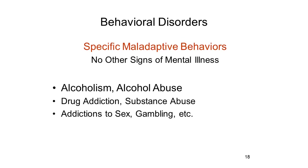In contrast, the category of mental illness known as the behavioral disorders consists of specific maladaptive behaviors—discrete behavioral problems that cause the person a lot of distress and may well cause a lot of distress to people around him or her too, but there are no other signs of mental illness. Alcoholism and alcohol abuse is a widely recognized form of behavioral disorder because there's a specific behavior: the person drinks too much, to excess, can't control drinking. Drug addiction and other forms of substance abuse are also classified under this label, as are addictions to other things like sex, gambling, and other activities.